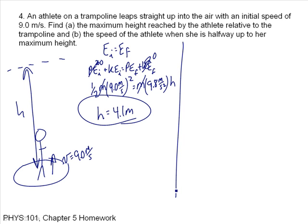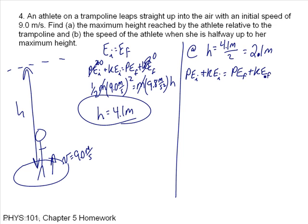Now, what is the speed of the athlete when she is halfway up to her maximum height? We want her speed at h equal to 4.1 meters divided by 2, which is 2.05, rounding to 2.1 meters. Doing the same energy analysis, PE-initial plus KE-initial equals PE-final plus KE-final, with the final state at a height of 2.1 meters. I'll choose the initial state at the bottom, where potential energy is zero but kinetic energy is nonzero since the speed is 9 meters per second.